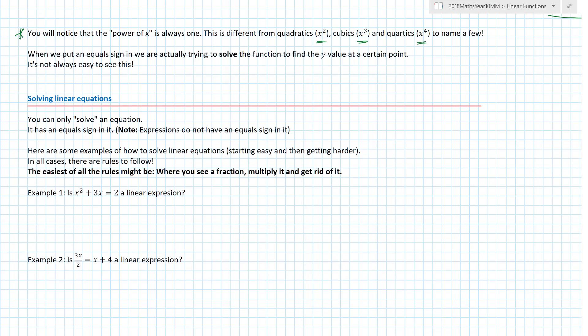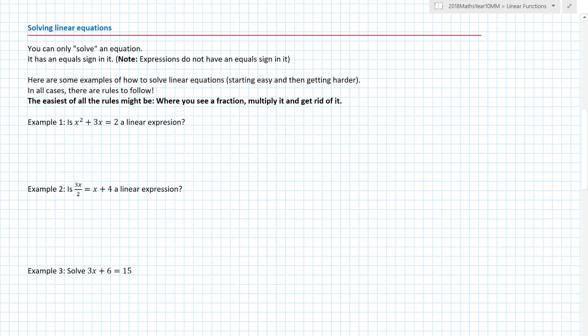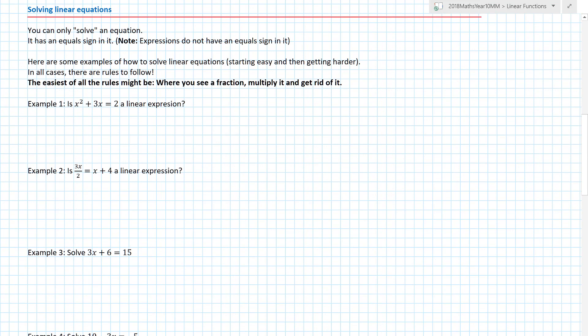When we put an equal sign in, we're actually trying to solve the function to find a specific x value. An equation is something like 3x plus 2 equals 6 because it has an equal sign. If I just had 3x plus 2, that's an expression. But with 3x plus 2 plus 4x, we can collect like terms and get 7x plus 2. We've simplified the expression, but we still don't know what x is.